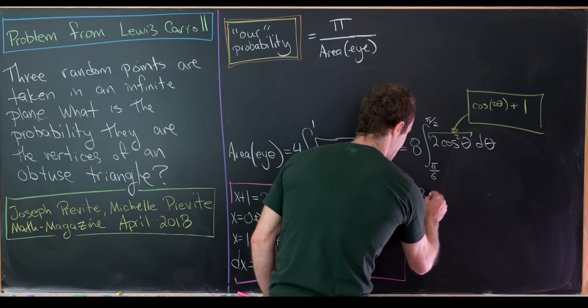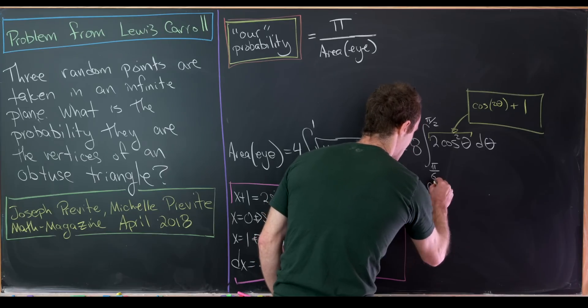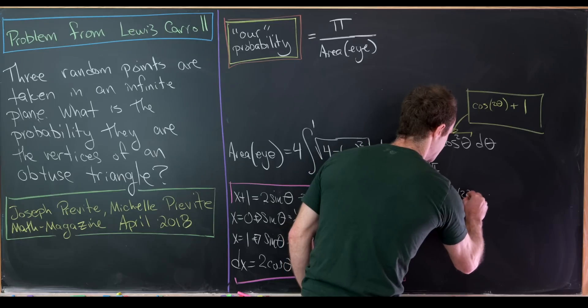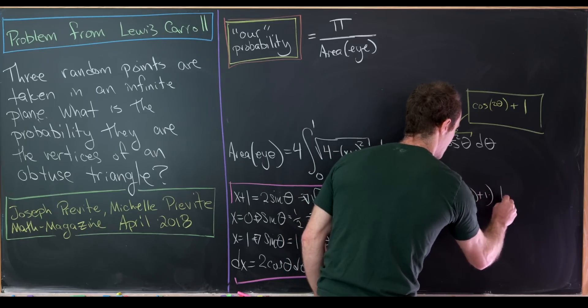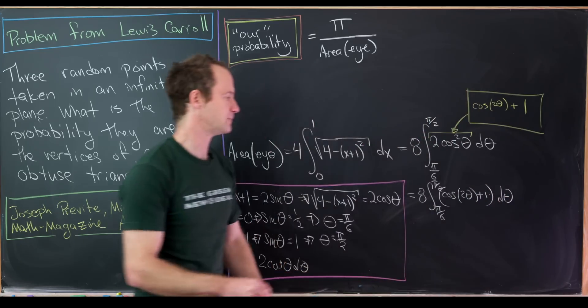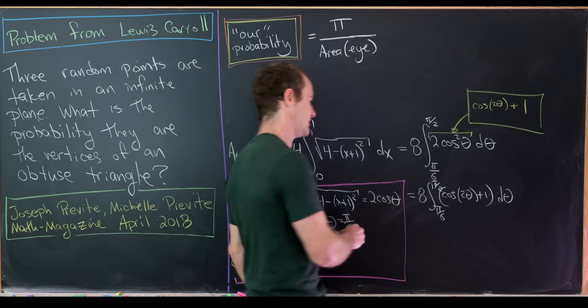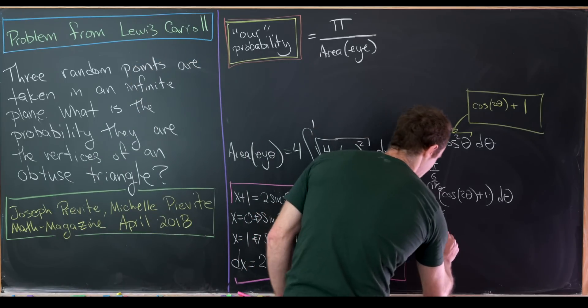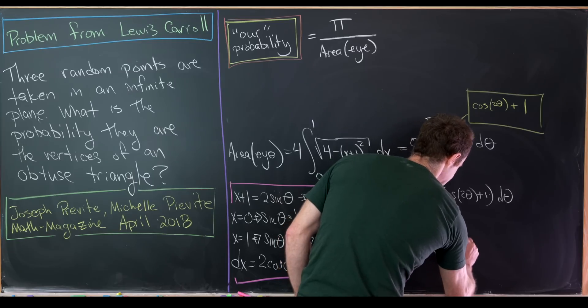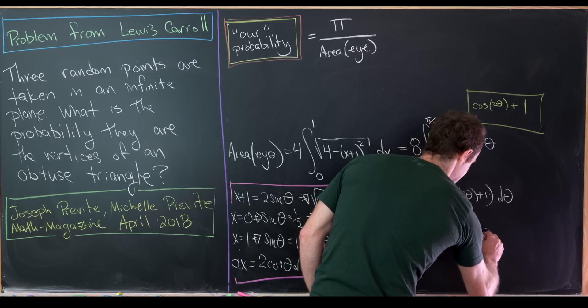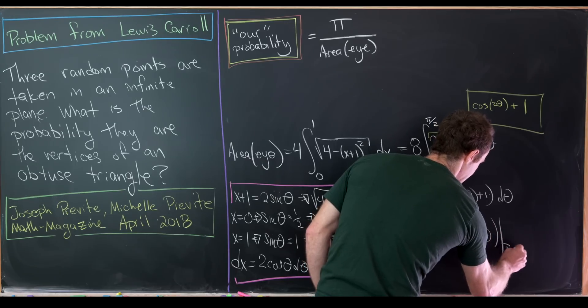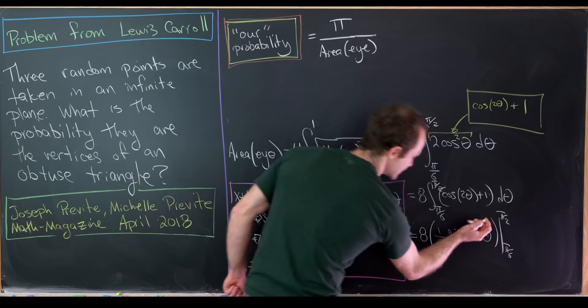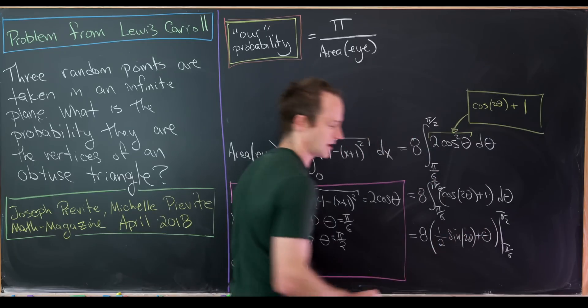So that's going to end up giving us 8, and then we have the integral from pi over 6 to pi over 2 of the cos of 2 theta plus the number 1 d theta. Now we can take the anti-derivative fairly easily. That'll give us 8. And then we'll have 1 half sine of theta plus theta. Then we need to evaluate this from pi over 6 to pi over 2. Sorry, that shouldn't be sine of theta, that should be sine of 2 theta.